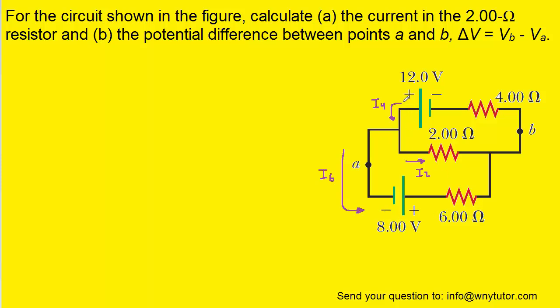The direction of each current was arbitrarily chosen. We could have shown I4 traveling to the right, I2 traveling to the left, or I6 traveling up the loop instead of down. If it turns out our choices are wrong, we can make adjustments later, but for now we'll leave the currents in the directions shown.